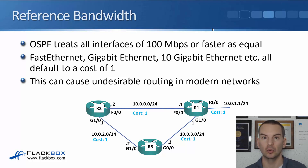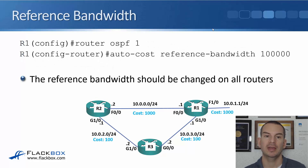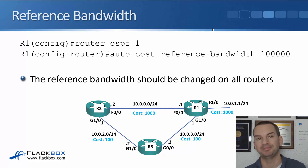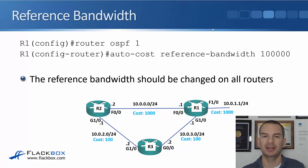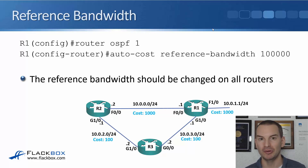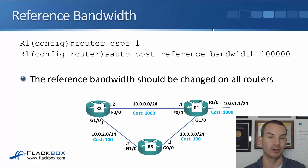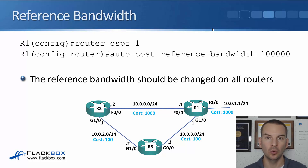The reason the default reference bandwidth is 100 is that OSPF has been around for a long time. When OSPF first came out, networks were running classical Ethernet at 10 megabits per second, and engineers thought 100 megabits per second would be the maximum. Obviously times have moved on — we now have Gigabit, 10 Gigabit, 40 Gigabit, and 100 Gigabit Ethernet. Using the old default reference bandwidth, all of these are treated as equal cost by OSPF, so we need to set the reference bandwidth to a higher value.